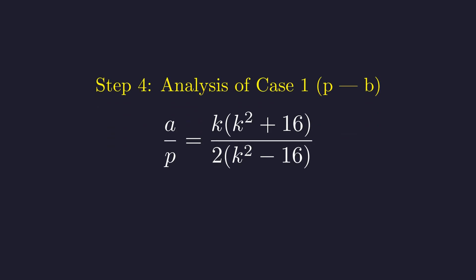After substituting and simplifying, we get this expression for a over p. Now, let's say this fraction reduces to n over d in lowest terms. Since p is prime, the denominator d can only be one or a prime number itself. This severely limits our options.